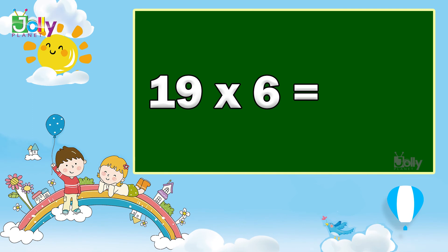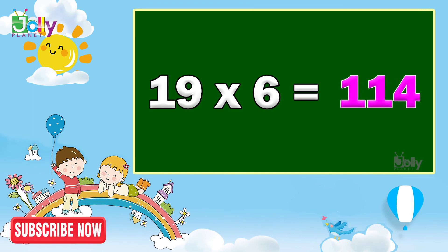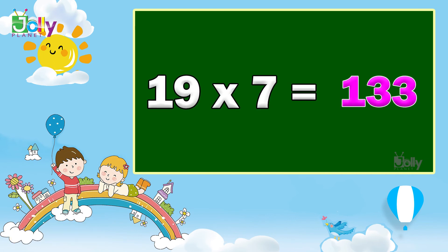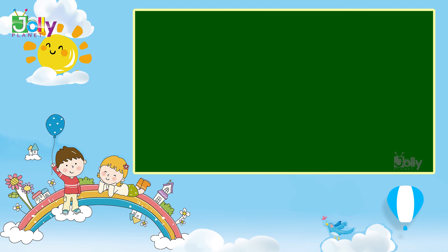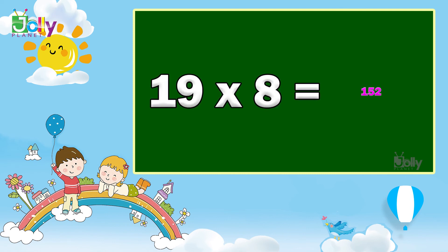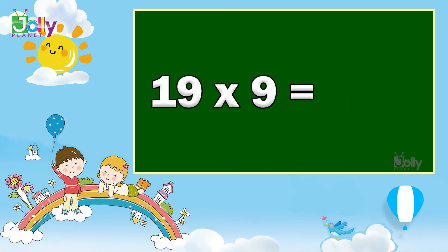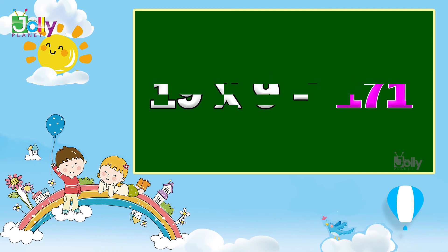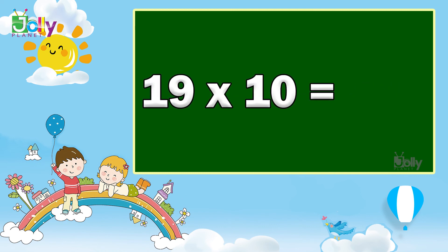19 6s are 114. 19 7s are 133. 19 8s are 152. 19 9s are 171. 19 10s are 190.